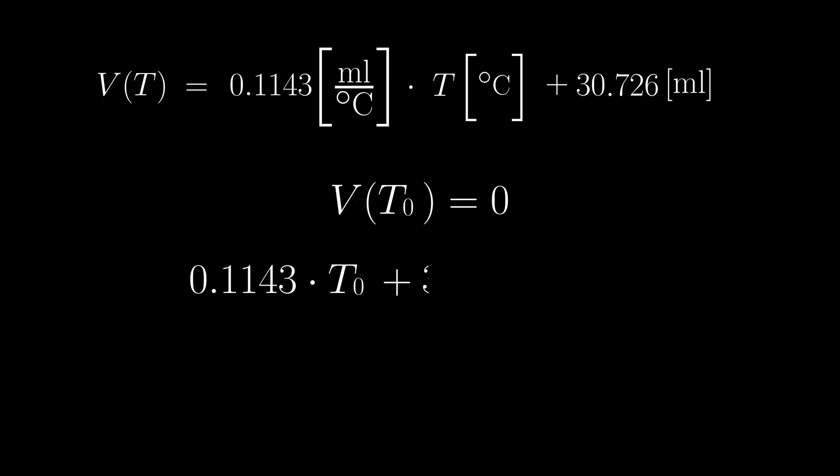As can be seen in the Excel sheet, the equation of the linear regression is given by V(T) = 0.1143[ml/°C] · T[°C] + 30.726[ml]. Since the volume cannot be negative, we set V(T₀) equal to zero. Solving for T₀ finally yields absolute zero: T₀ ≈ -268.82[°C].